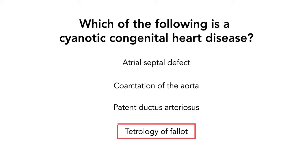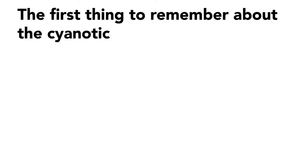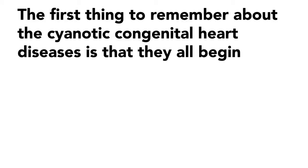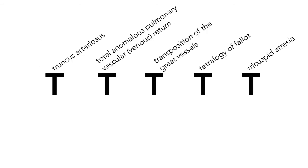Luckily, there is a mnemonic to remember all five. The first thing to remember about the cyanotic congenital heart diseases is that they all begin with the letter T.